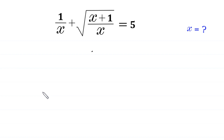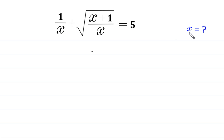Hello, welcome to how to solve this very nice radical equation: 1 over x plus the square root of x plus 1 over x is equal to 5. We need to find all possible values of x.